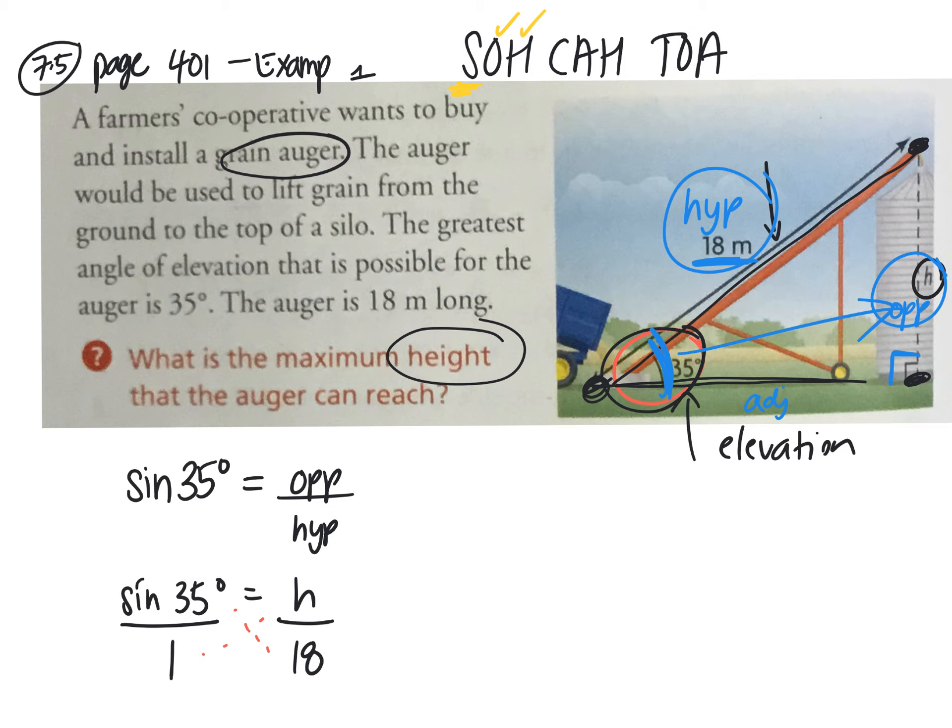1 times h, and then we're going to do sine 35 times 18. Punch it into your calculator. So it's approximately equal to 10 meters if you round it to the nearest meter.